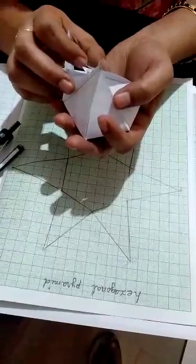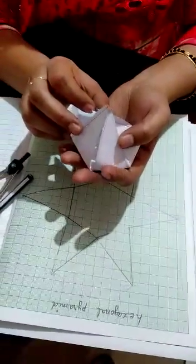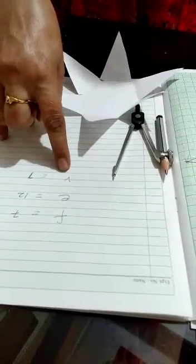When you make, you use a chart paper. So, it will be stiff. And, you can stick it very easily. So, hexagonal pyramid has 7 faces, 12 edges, and 7 vertices.